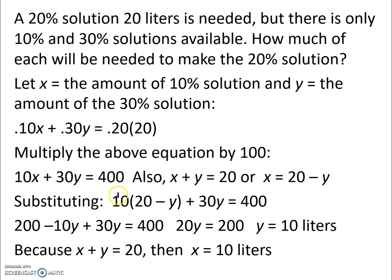Going ahead and doing the distribution, we take 10 times 20 for 200, and 10 times negative y, which gives us negative 10y. We still have our plus 30y equals 400. Combining like terms, we found that we had 20y, and going ahead and subtracting 200 to the other side, we're left with 20y equaling 200.